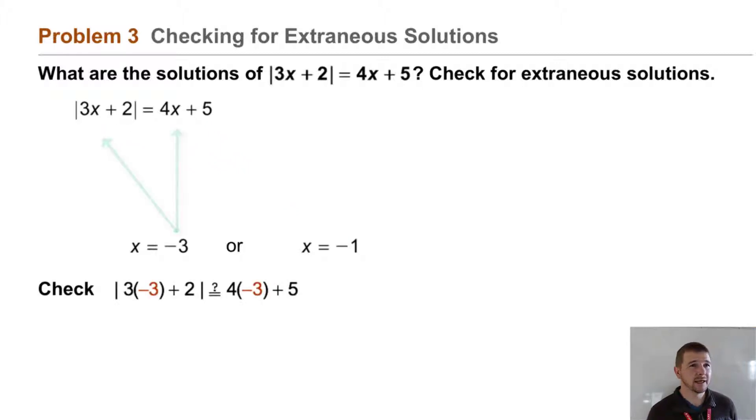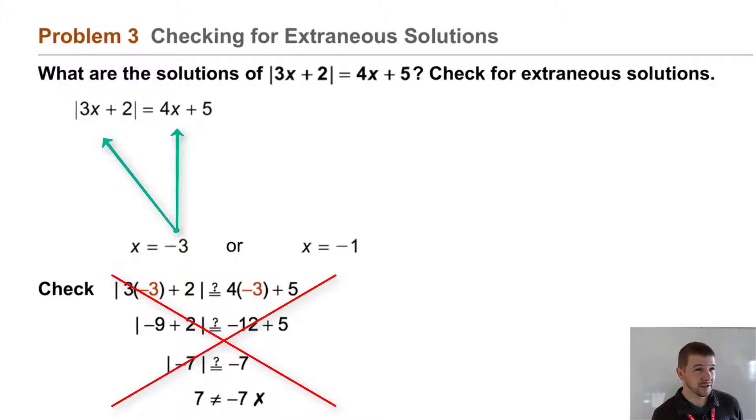So as we check, first negative 3, shown here on the left, simplifying we end up with positive 7 equals negative 7 and that's not true. So the solution, even though we followed all the right procedures, the solution negative 3 is not actually a solution of the equation. So it's considered an extraneous solution.